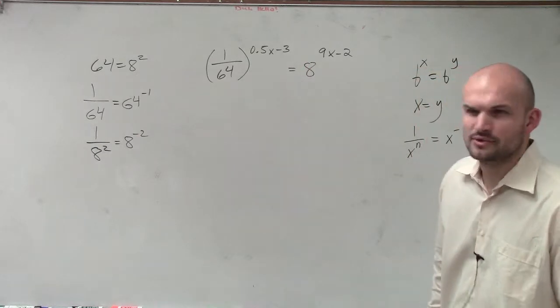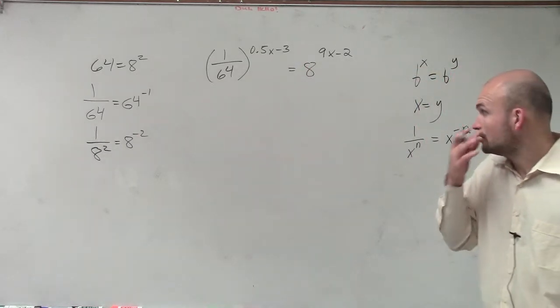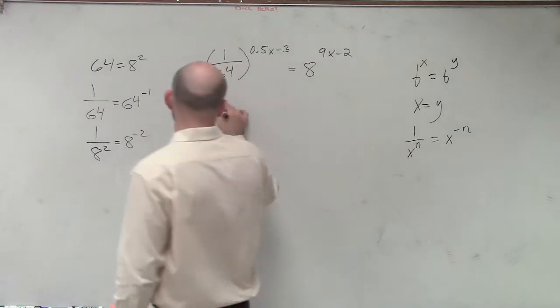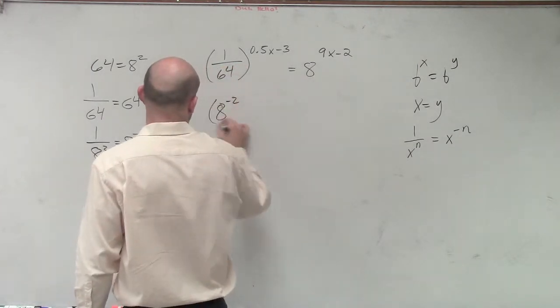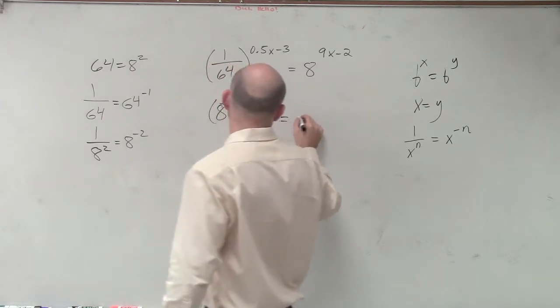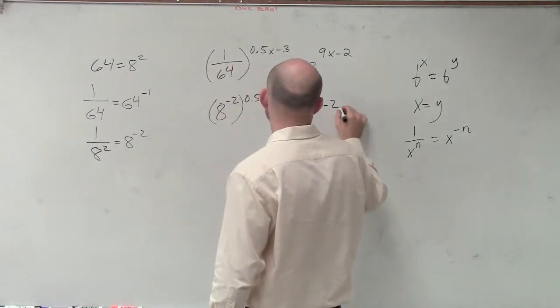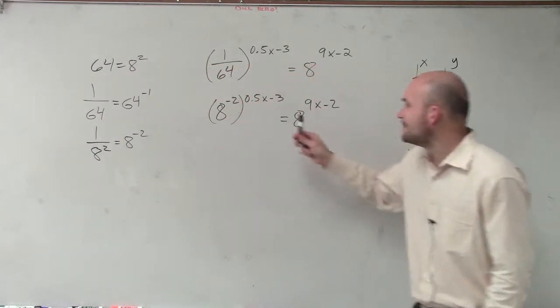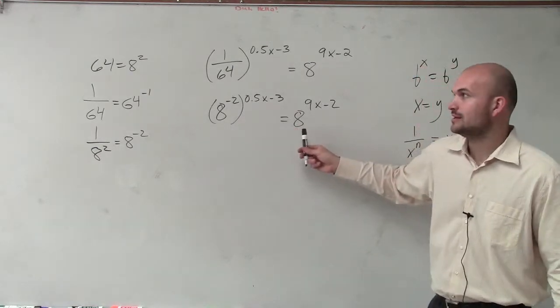Does everybody see what I did or have any questions on that? Why did you have to turn the 8 to that? Because now, if I rewrite this as 8 to the negative second power raised to the 0.5x minus 3 equals 8 to the 9x minus 2, now you can see that they both have a base of 8.